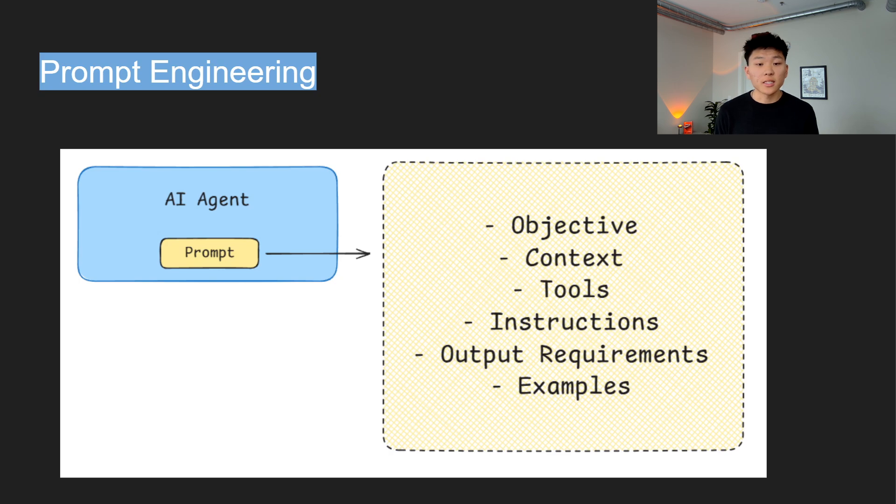Starting off with the objective, you need to define the agent's overall goal. This gives the agent a clear sense of purpose. Then we have context. This provides the agent with all of the relevant background information, and it helps it understand the environment that it's working in. Obviously, we have tools. You want to outline each tool the agent can access, what each tool does, and when to use each one. Then we have instructions. You want to be explicit about what you want the agent to do and how you want it to take action. Output requirements. Specify exactly what the output should look like. And finally, we have examples. These are really the linchpin of a good prompt. They show the agent what a successful flow and what a successful output looks like, reducing ambiguity.